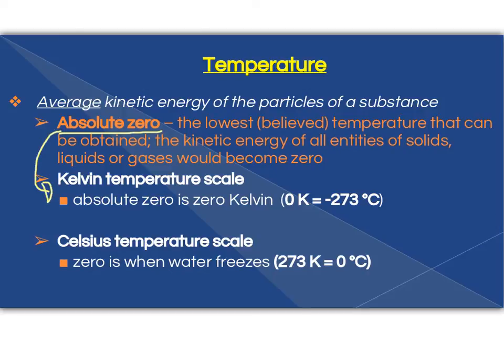And absolute zero is what the Kelvin scale is measured on. That's a scale we're going to be introducing today. Absolute zero is the lowest believed temperature that can be obtained at all. So when we're at absolute zero, the kinetic energy of all entities, of anything, a solid, liquid, or gas, would be zero.